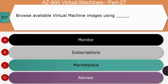Question 17: Where do you browse available virtual machine images — Monitor, Subscription, Marketplace, or Advisor? The right answer is Marketplace. You can browse available virtual machine images in the Azure Marketplace. Azure Marketplace provides access and information on solutions and services available from Microsoft and their partners.